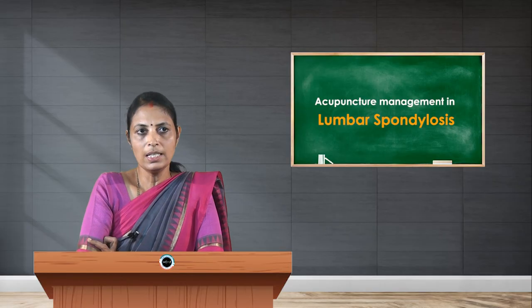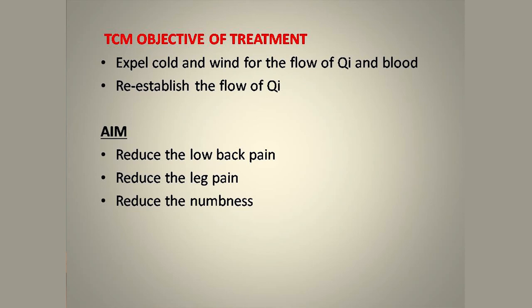The TCM treatment objectives are mainly to expel cold and wind, restore the flow of qi and blood, and re-establish the flow of qi. The aim of management is to reduce back pain, leg pain, and numbness. From a modern physiological perspective, acupuncture points provide an analgesic effect evidenced by the release of endorphins — a natural painkiller. The micro-injury induced by needling also helps to strengthen the body's defense mechanism.